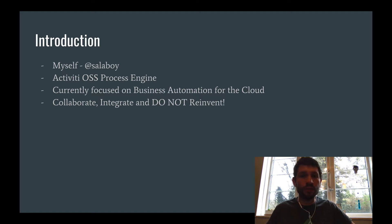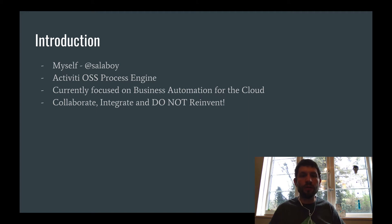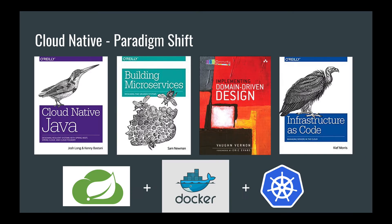Our focus is not to reinvent anything, so we spend a lot of time interacting with other groups and projects to join forces and provide the best-of-breed services for business automation in the cloud. When we talk about cloud-native applications, we need to be specifically clear about what we are doing and why we are making certain decisions. We need to follow common practices being followed by the industry — we don't need to invent anything, we just need to follow what other projects are suggesting and apply well-known techniques for distributed architectures.